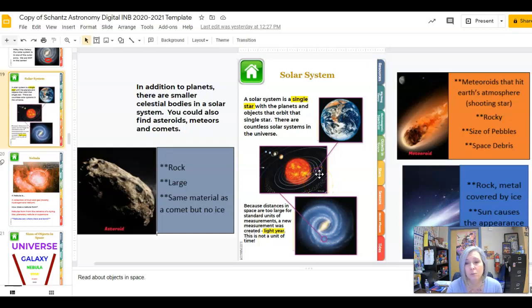Now, other objects you might see: meteoroids, asteroids, and comets. You need to know the difference between those three objects. Remember that because space is so large, we use a light year to measure distances between objects.